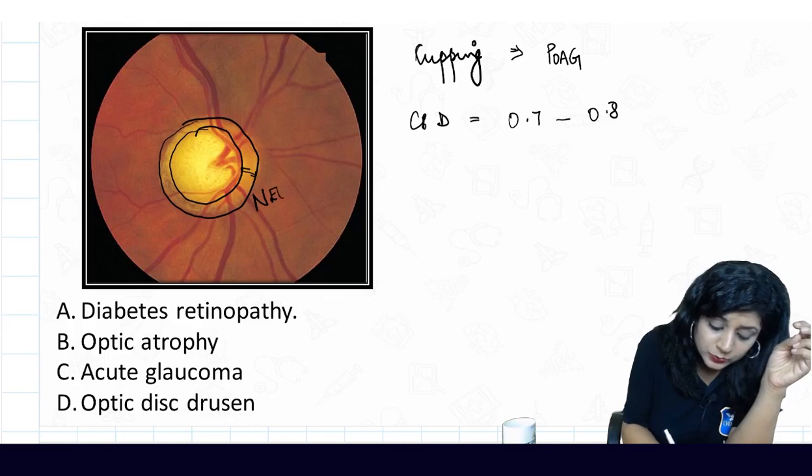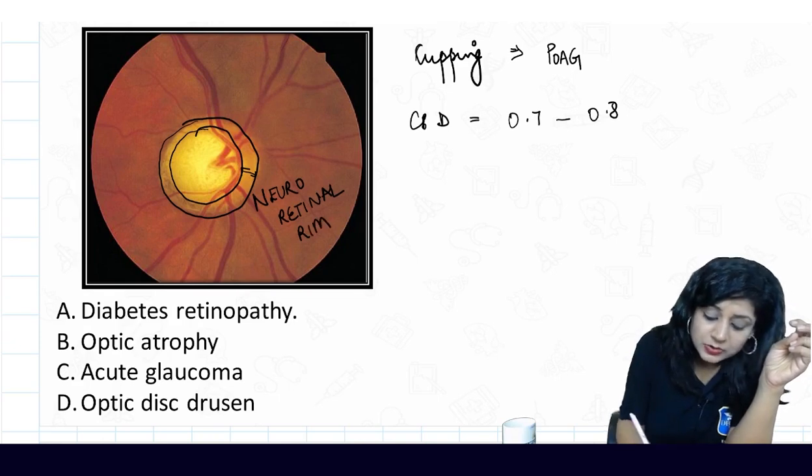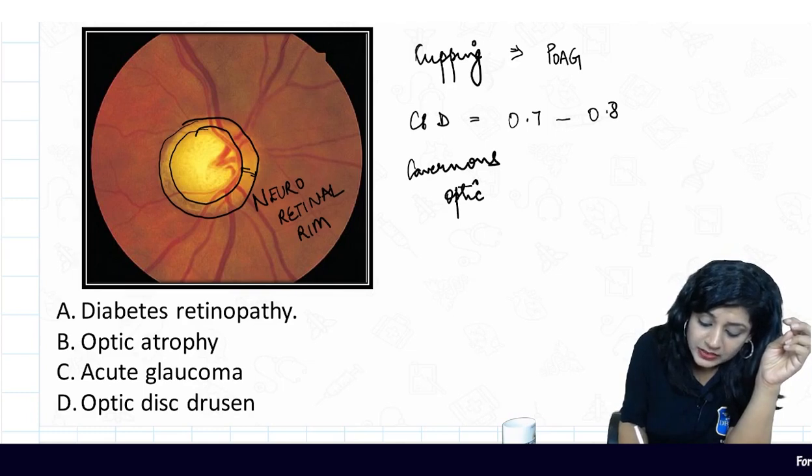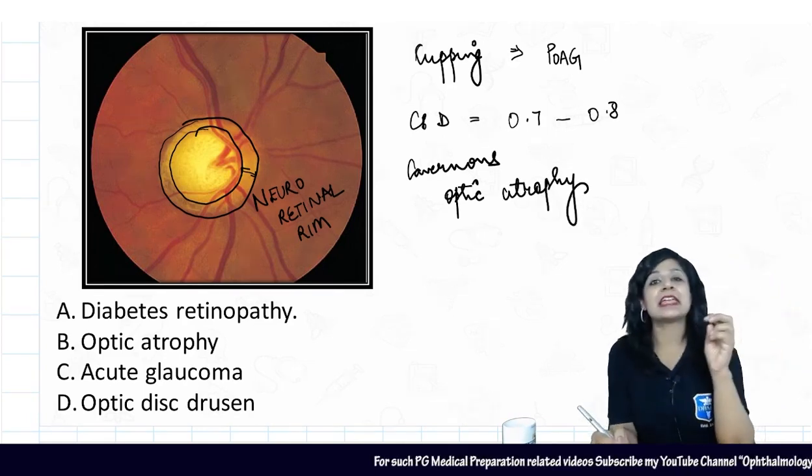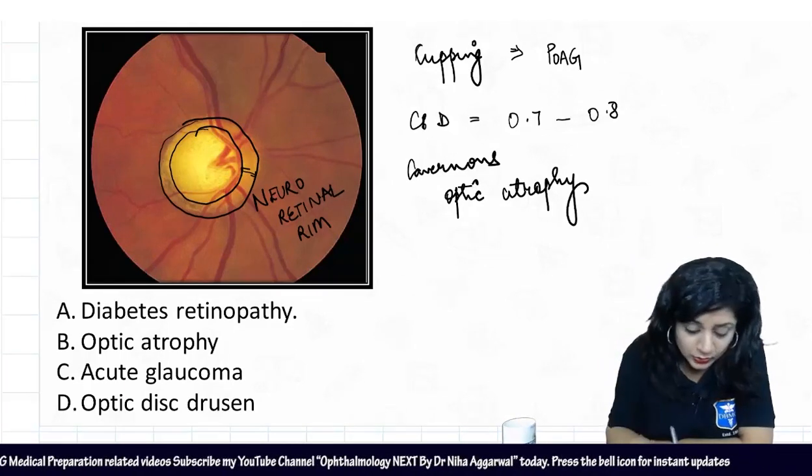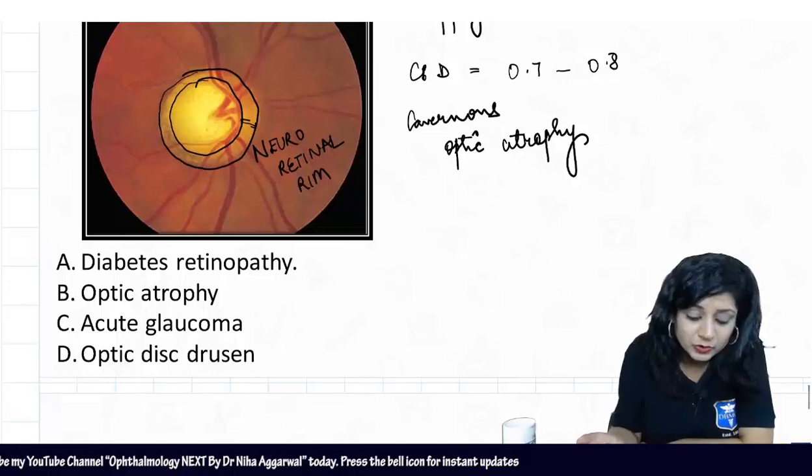You can see this is the neuroretinal rim. What are these changes called? This is called cavernous optic atrophy, also called cave-like optic atrophy, that you get in patients with glaucoma. Now look at the options. Option A is diabetic retinopathy.